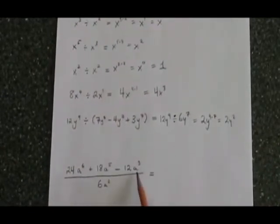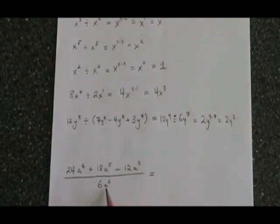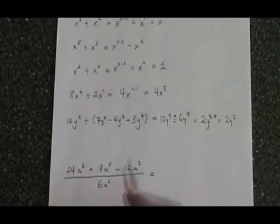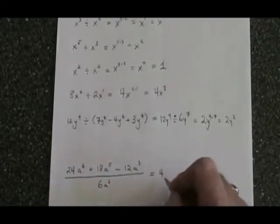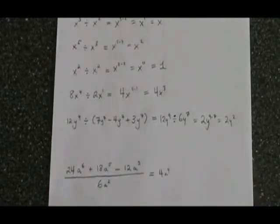In this last example, all three of these terms in the numerator are being divided by the term in the denominator, so we will do the divisions one by one. 24 divided by 6 is 4. a to the 6 divided by a squared is a to the 4, because 6 minus 2 is 4.